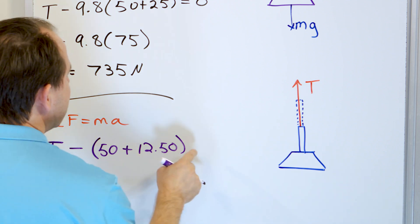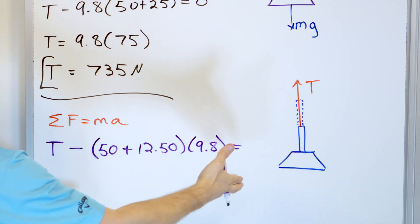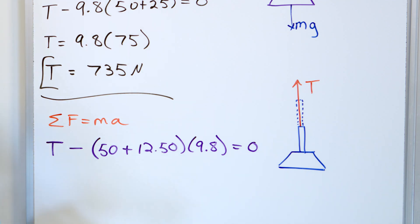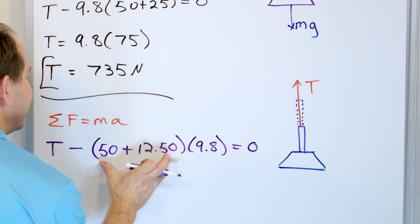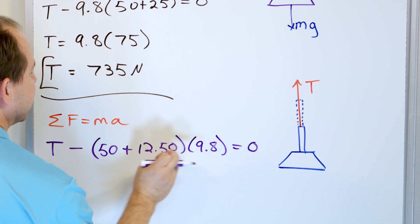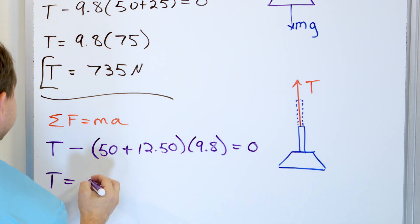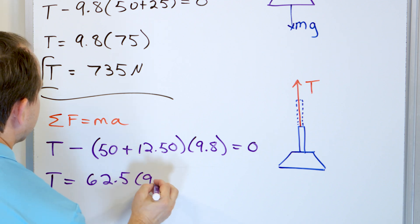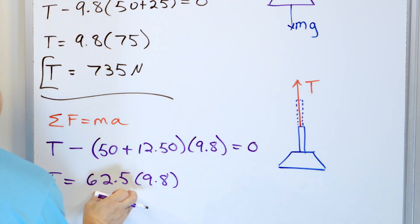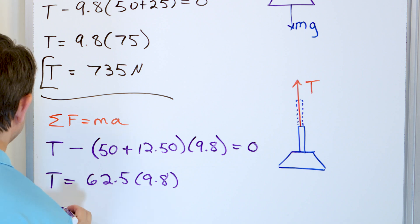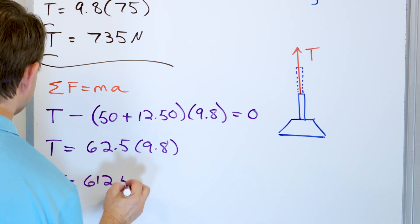The sum of the forces equals mass times acceleration. The tension acts upward; the downward weight is the combined mass of the chandelier (50 kg) plus half of the chain (12.5 kg, since the whole chain was 25 kg) times gravity 9.8, and acceleration is zero. So the tension equals 62.5 times 9.8, which is 612.5 newtons.